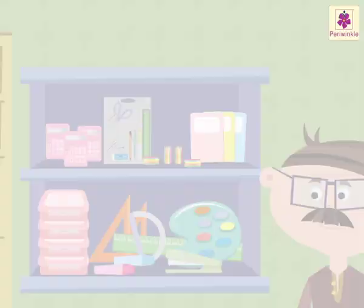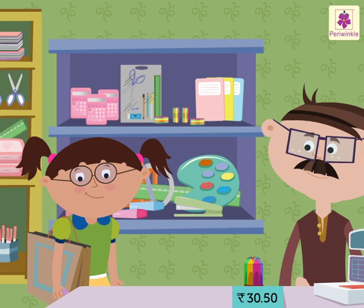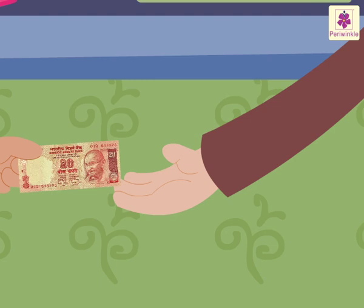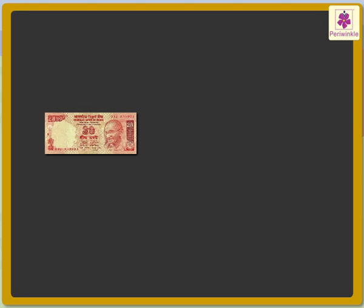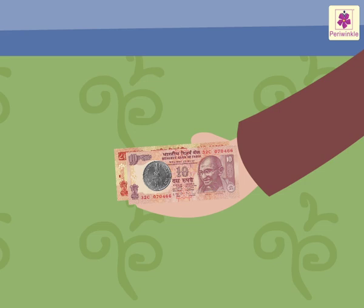Saira goes to a stationary shop. She wants to buy crayons. The cost of the crayons is 30 rupees 50 paise. Saira gives the shopkeeper a 20 rupee note and a 10 rupee note, as 20 plus 10 is equal to 30. She also gives 1 fifty paise coin. It means she gave 30 rupees and 50 paise to the shopkeeper.